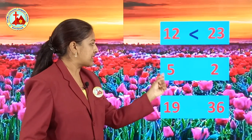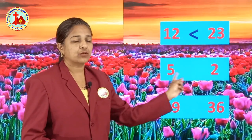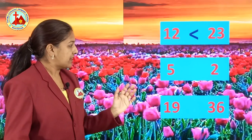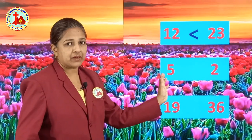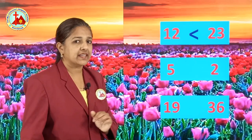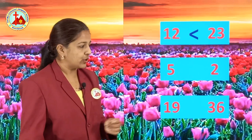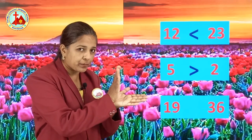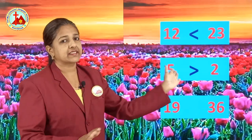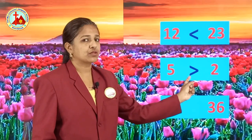Next numbers are 5 and 2. From these two numbers, you have to see which is the greater number or lesser number. Here 5 is greater than 2. So what you all have to do? Put this sign. When the mouth is open, it is greater than sign. So 5 is greater than 2, so this sign.